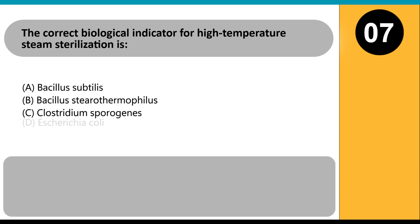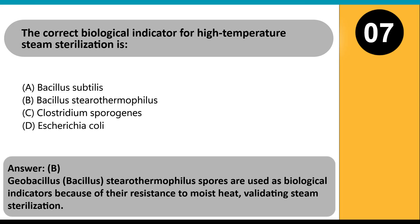The correct biological indicator for high-temperature steam sterilization is: A. Bacillus subtilis. B. Bacillus stearothermophilus. C. Clostridium sporogenes. D. Escherichia coli. Answer: B. Geobacillus (Bacillus) stearothermophilus spores are used as biological indicators because of their resistance to moist heat, validating steam sterilization.